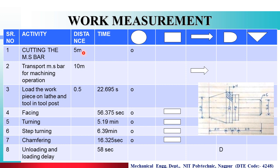The distance to the machine is 5 meters, so the operator will move to perform the operation. Then, after cutting, the material will transfer from the cutting section to the machining section — that is why we have a 10 meter distance here.